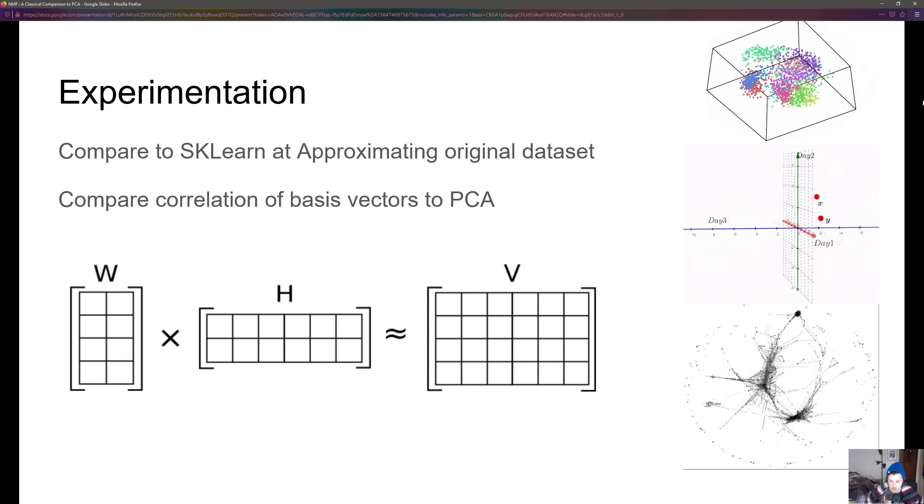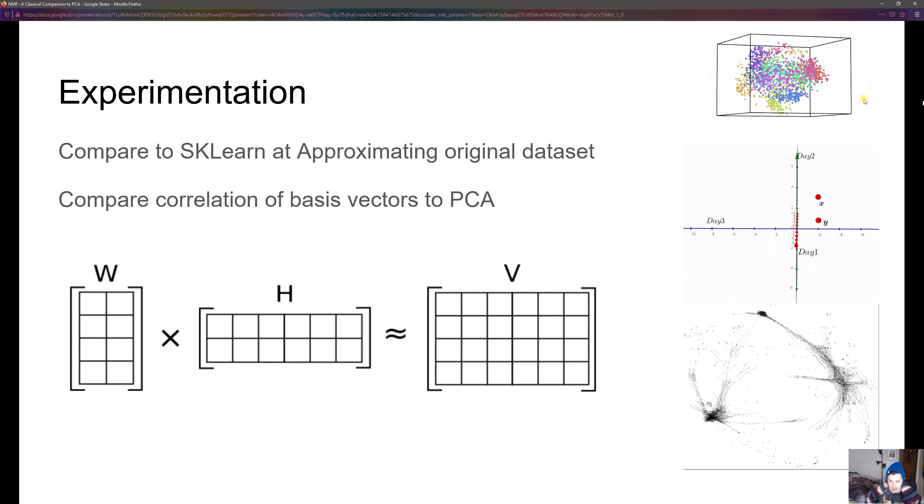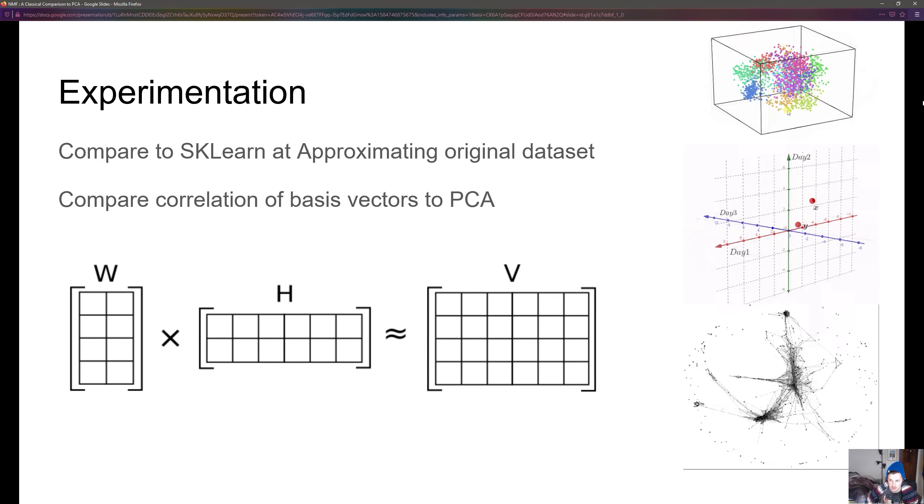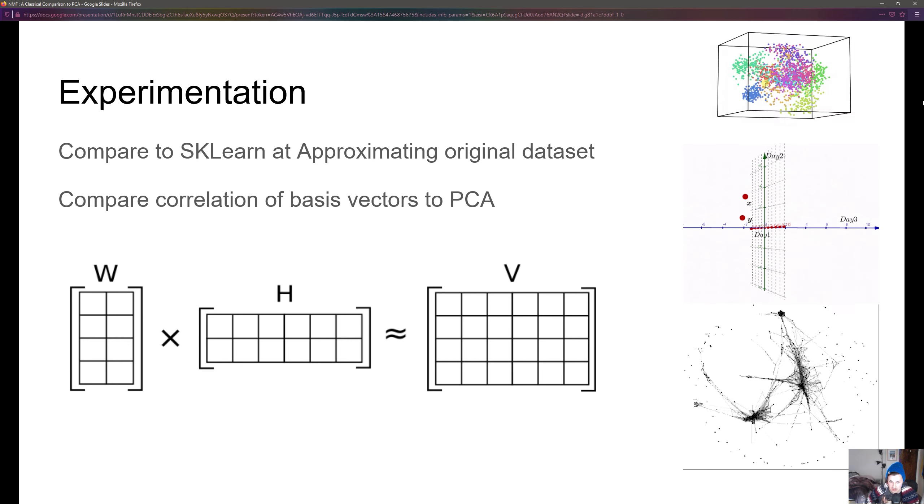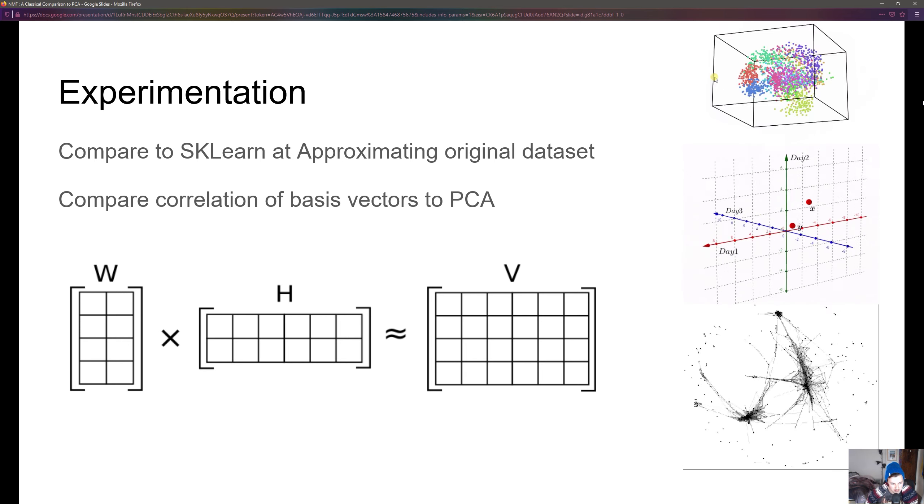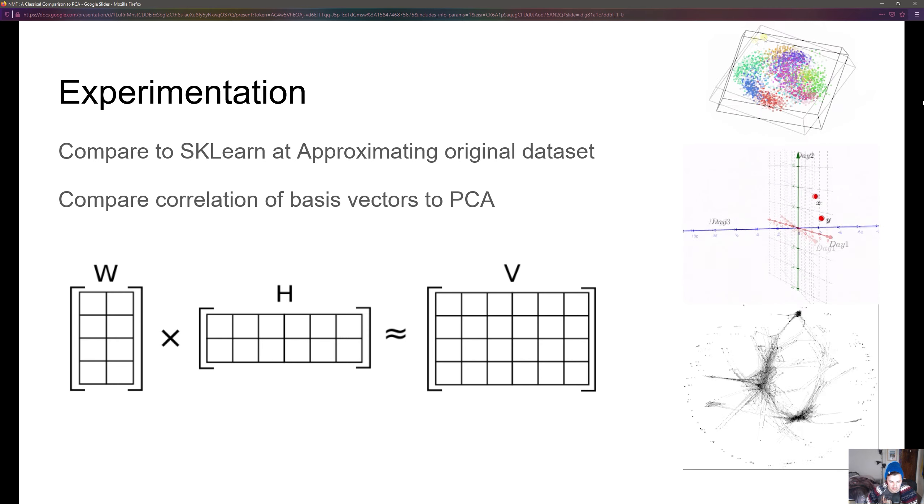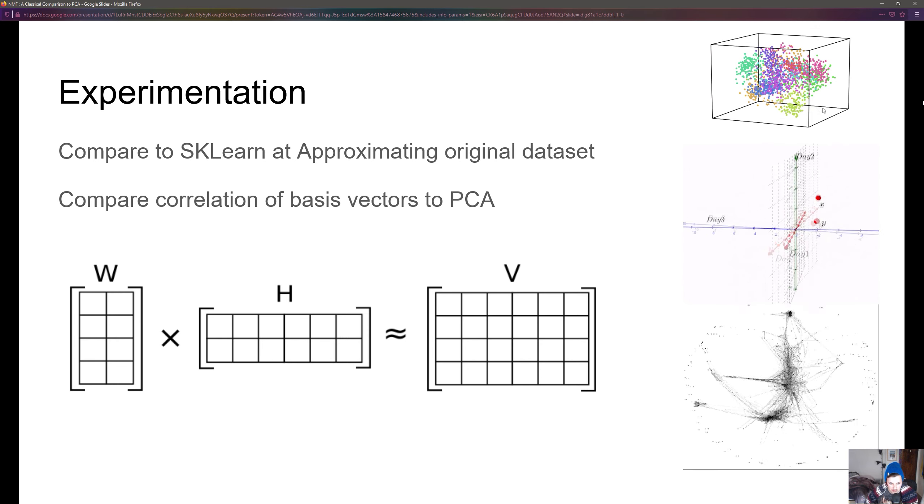W can be compared to PCA's principal components because they're both basis vectors that can be used to project our original values onto.